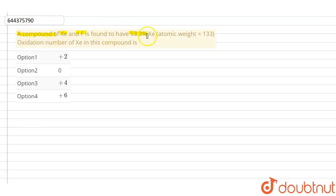is found to have 53.3 percent xenon. Oxidation number of xenon in this compound is: plus two, zero, plus four, or plus six.